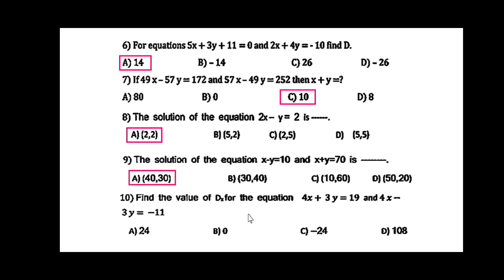Find the value of Dx for the equations 4x + 3y = 19 and 4x - 3y = -11. After solving these two, you are getting the value of Dx as -24. I think you got all the problems from topic 1, that is linear equations in two variables.